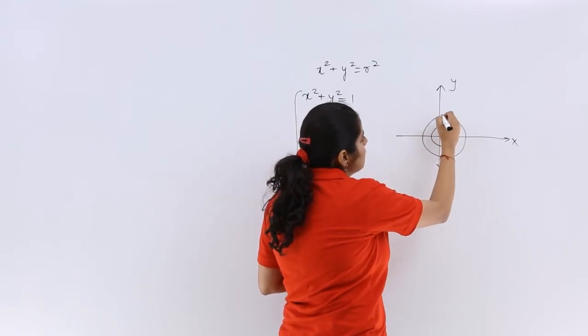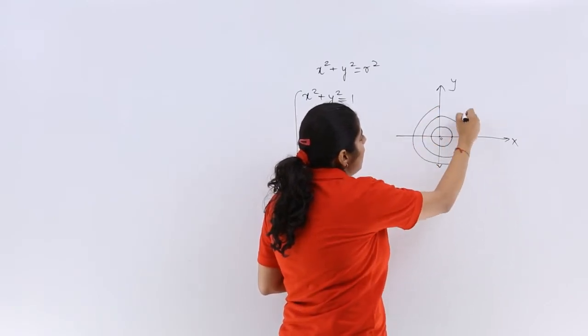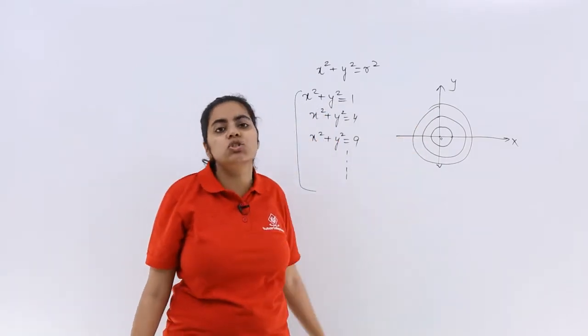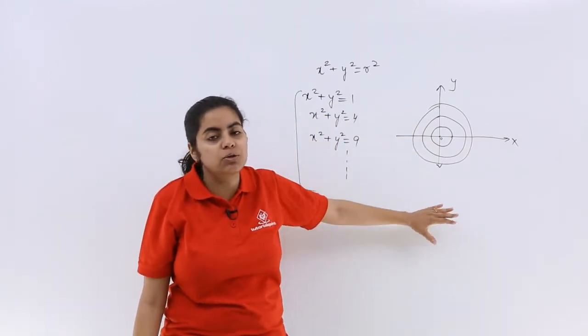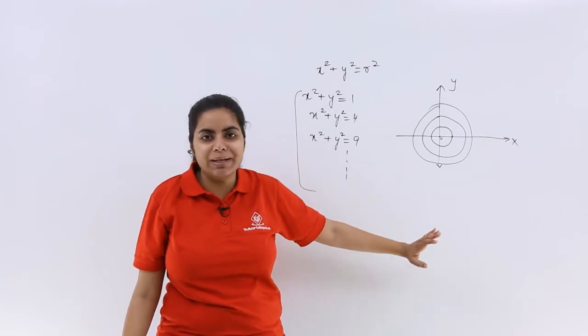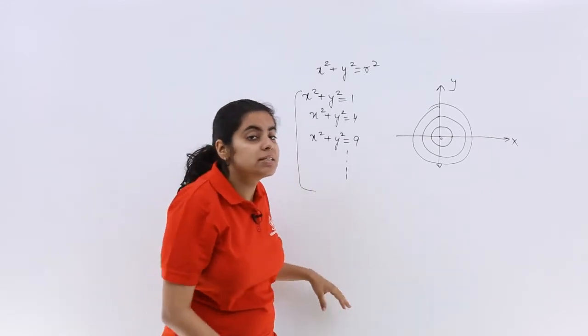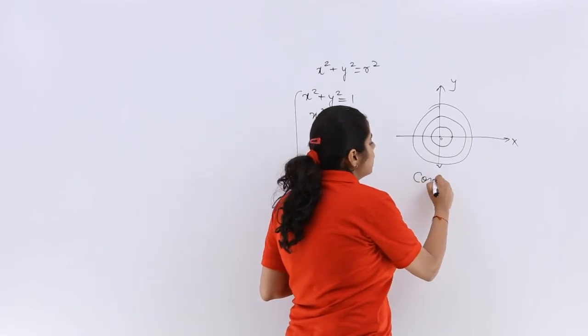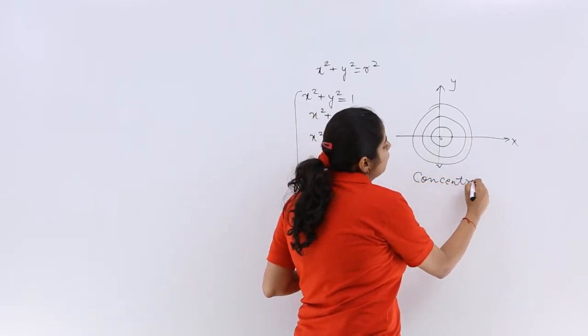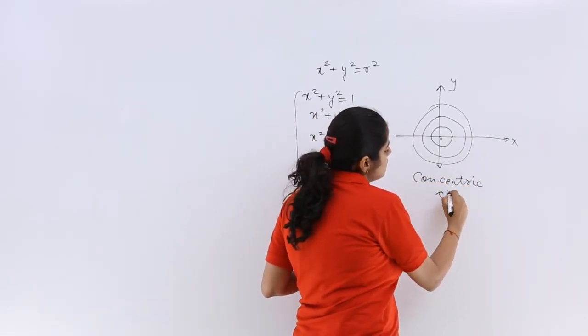x² + y² = 9 could be something like this. This is just a rough sketch, so the accuracy is not there, but you understand this is for understanding purposes. We get concentric circles.